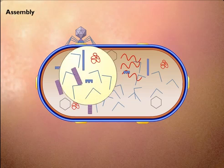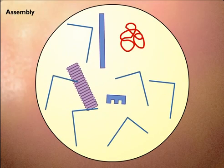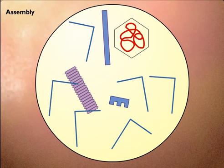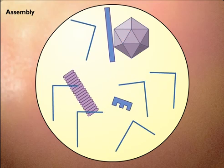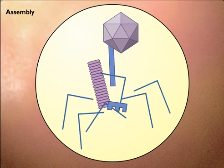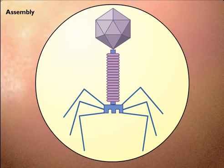During the assembly or maturation phase, the phage DNA becomes packaged in the phage head protein and the various components of the phage structure come together to form the intact or mature phage.